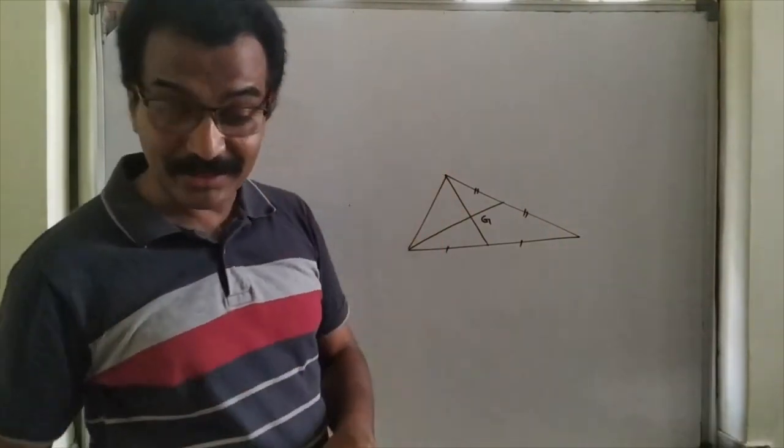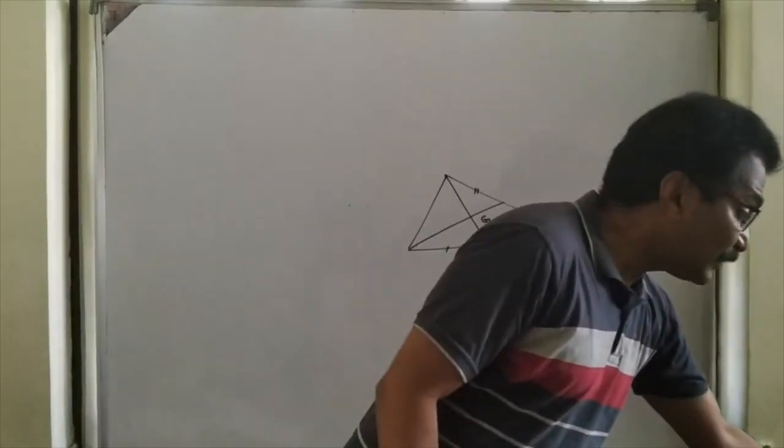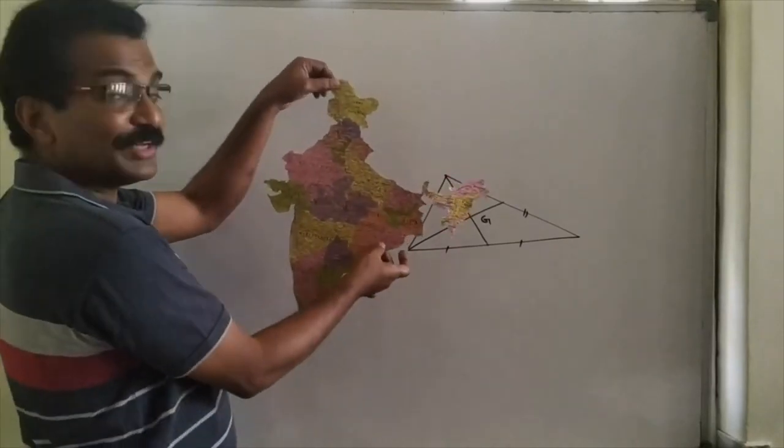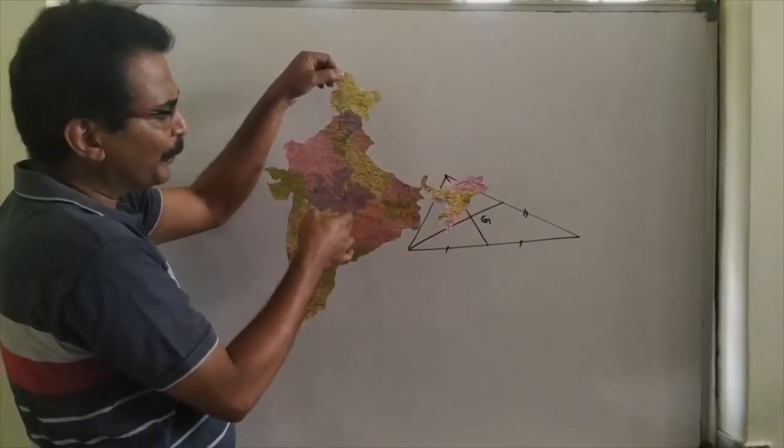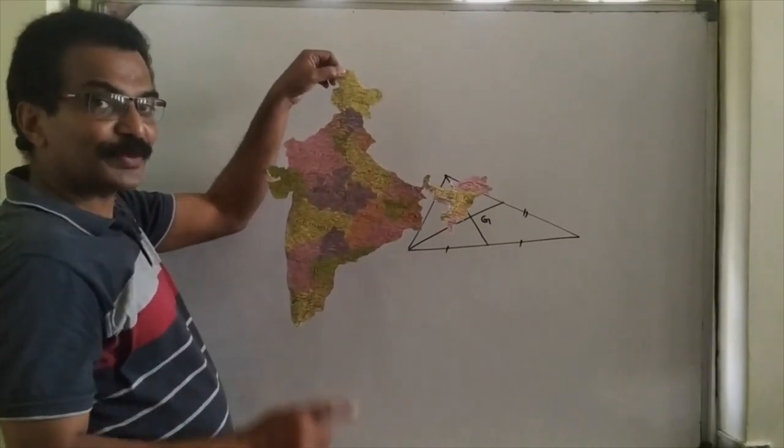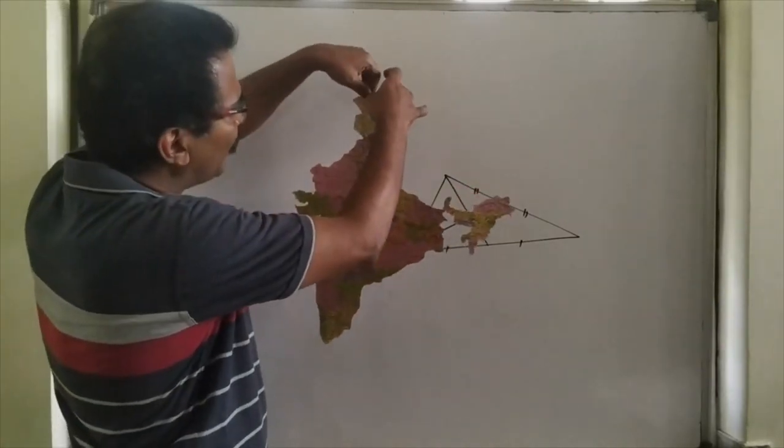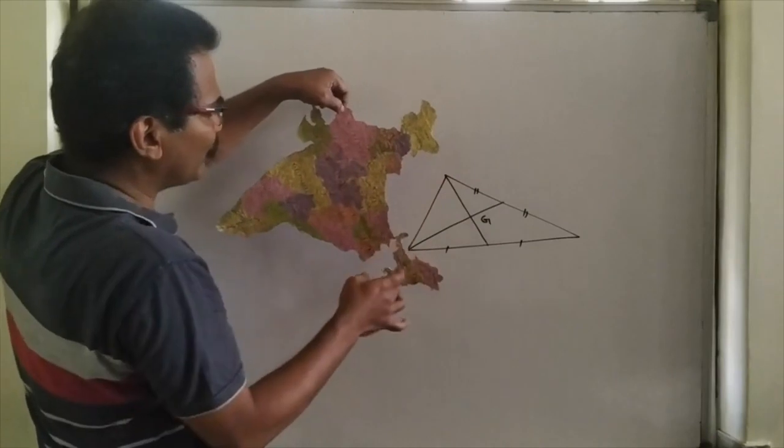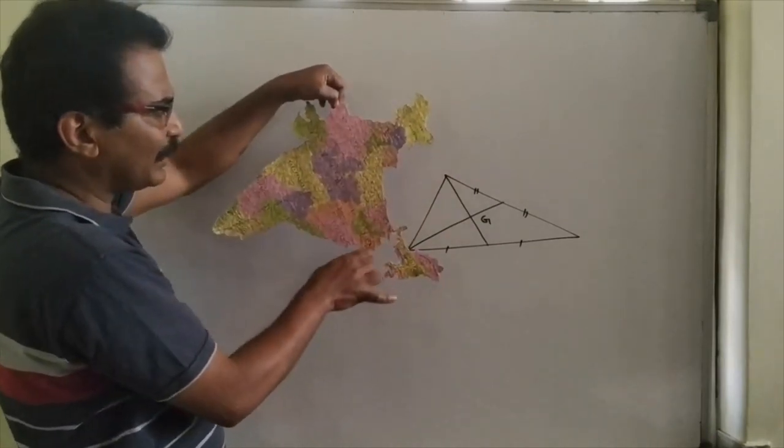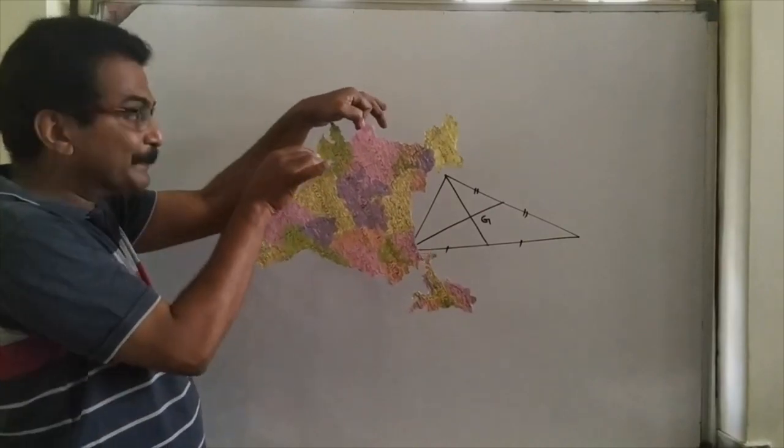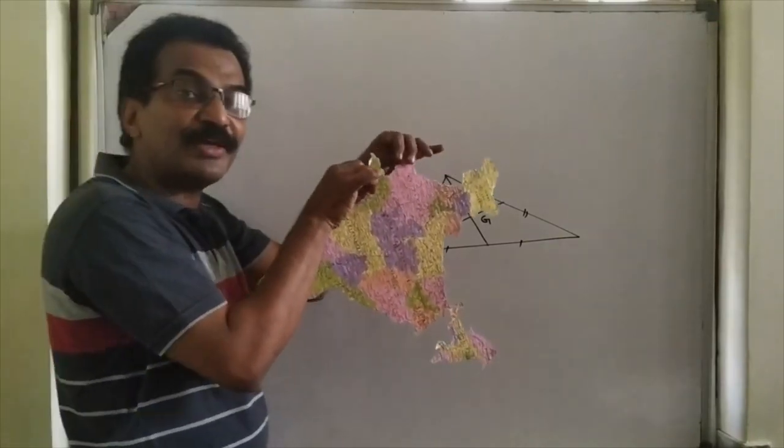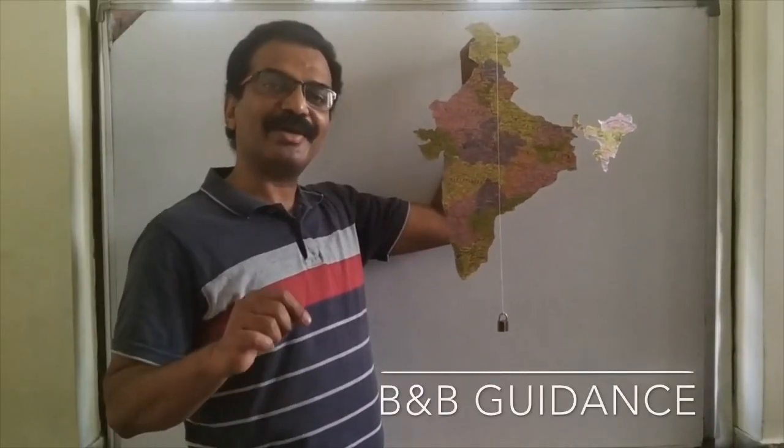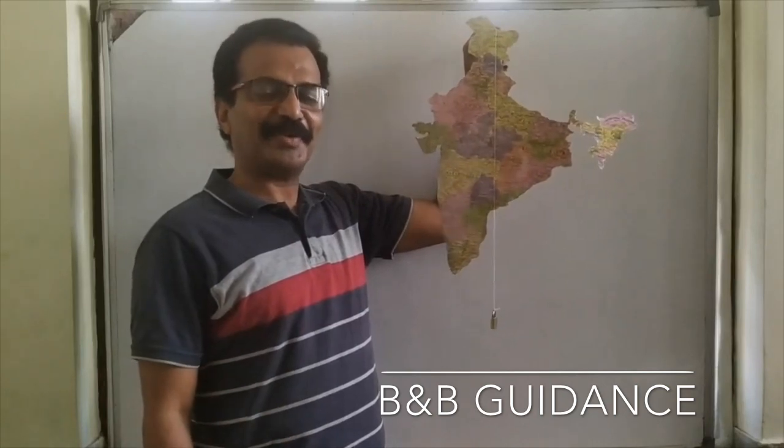Well, I am giving you one homework. If you take a lamina in the shape of our country, India, where will be the position of center of gravity? And you can try. You have to suspend it from one point and make the vertical line and go for another point of suspension. Again, make the vertical line. The point of intersection of lines will be giving you the position of center of gravity. And find it and let me know where, in which city, center of gravity lies.